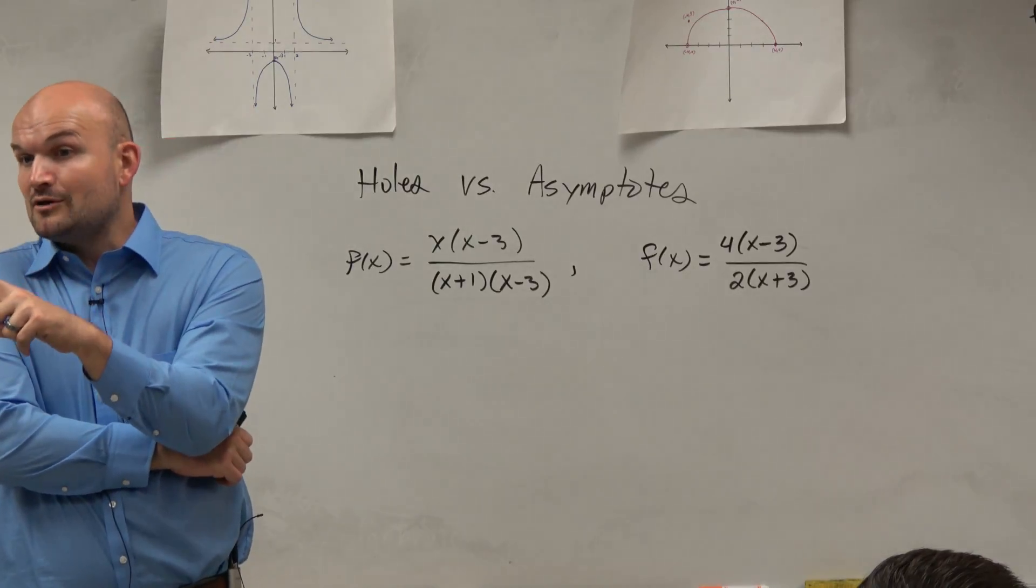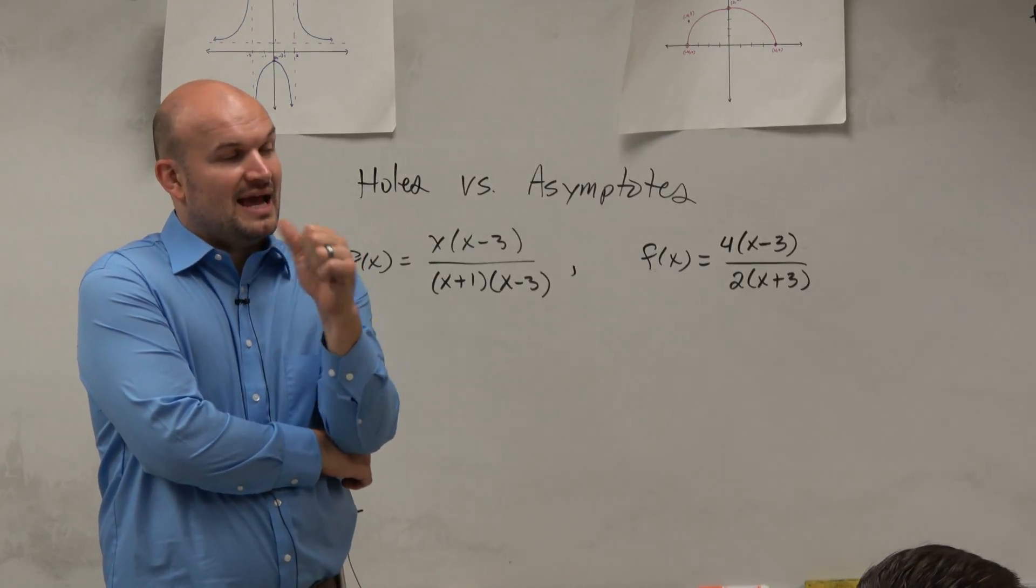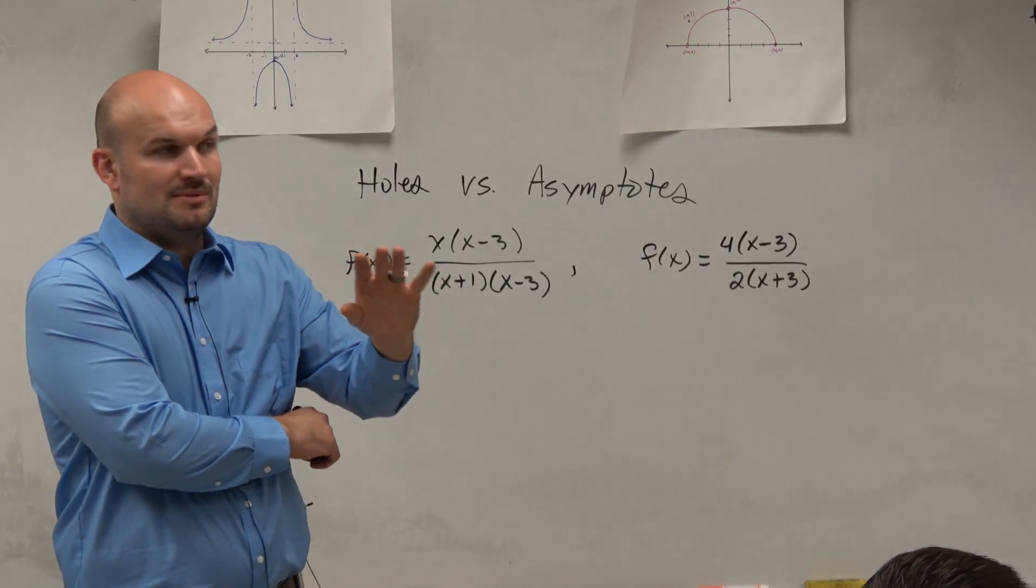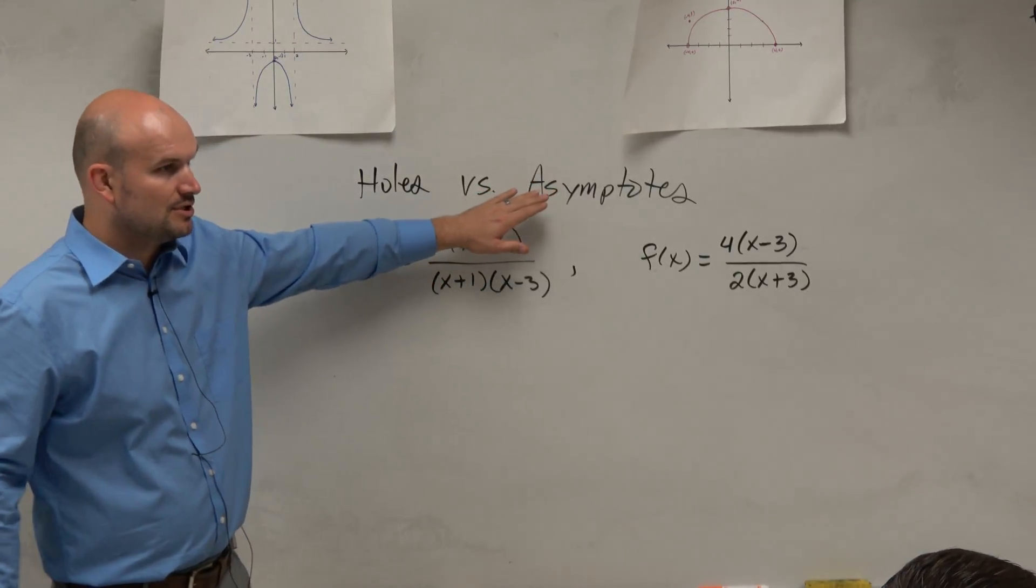It's going to be removable, non-removable, and we could be a vertical asymptote, a hole, or a jump. So we are not going to refer to jumps. Right now, we're just going to talk about holes and asymptotes.